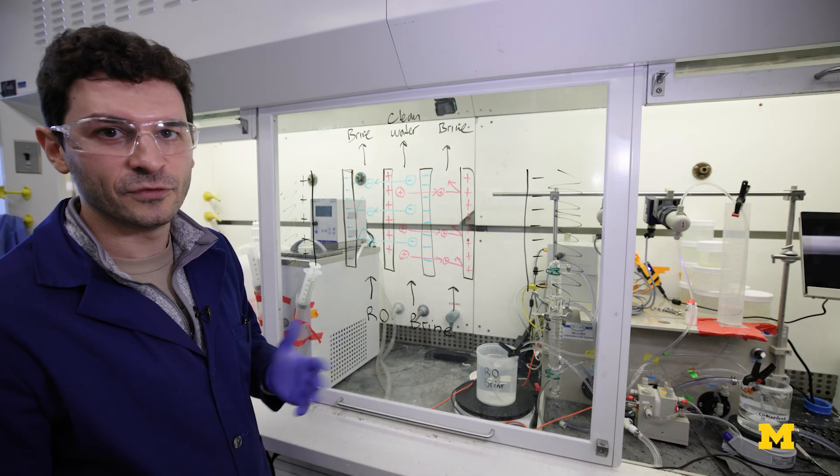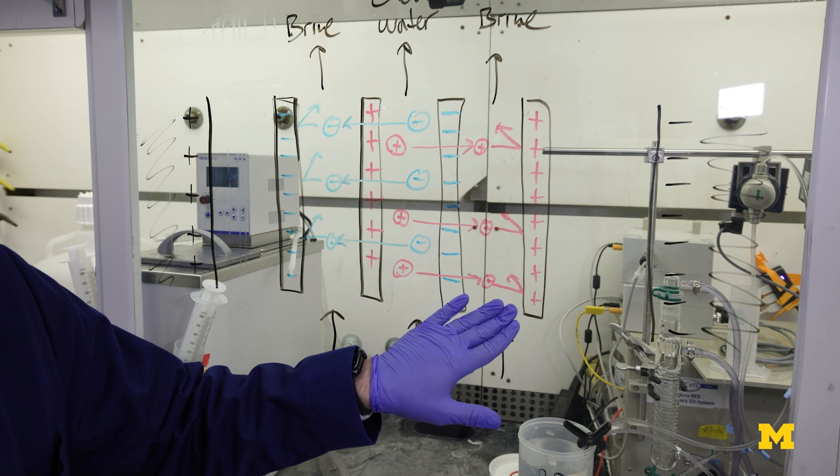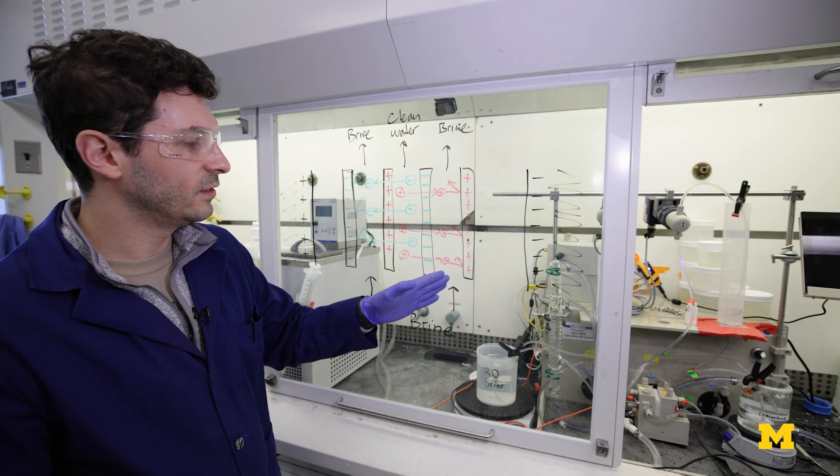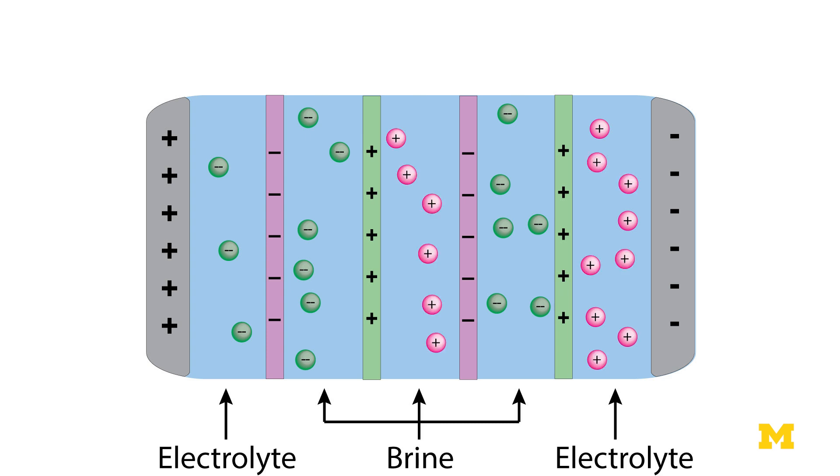The problem here is that conventional membranes when they're met with these extremely charged concentrations will lose their selectivity, so some of these cations begin to sneak through the positively charged membrane.